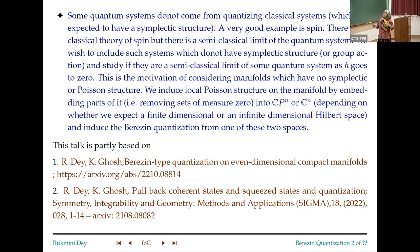But in nature there are systems which do not have symplectic structure and yet can be quantized. A very good example is spin. There is no classical theory of spin, but there is a semi-classical limit of the quantum system. So we want to include such systems which do not have symplectic structure or even a group action, but it is a semi-classical limit of some quantum system as certain parameter goes to zero, h-bar.